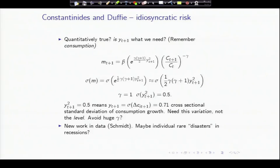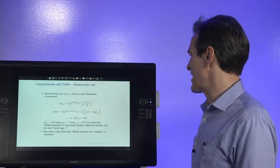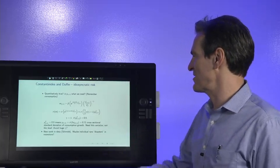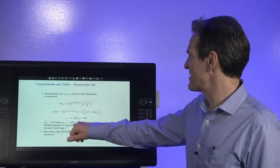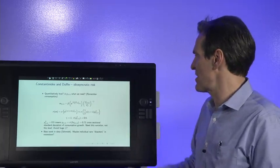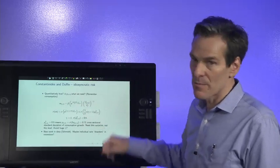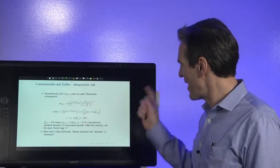To get a risk aversion of one, you need about that thing to be about 0.5. That's our usual 0.5. Well, that means that the cross-sectional standard deviation of consumption growth is about 0.71. That's just huge—71 percentage points. And that needs to be the variation, not just the level. So I'm not convinced that this quantity, the cross-sectional variation of consumption growth, varies over time enough to account for the equity premium and our puzzles. But that's an issue for the data.